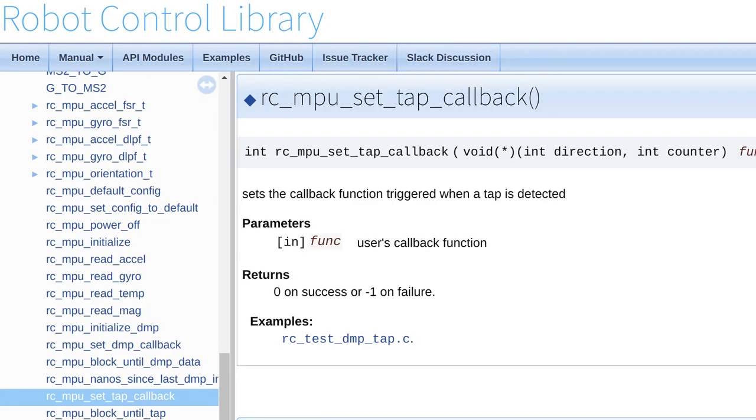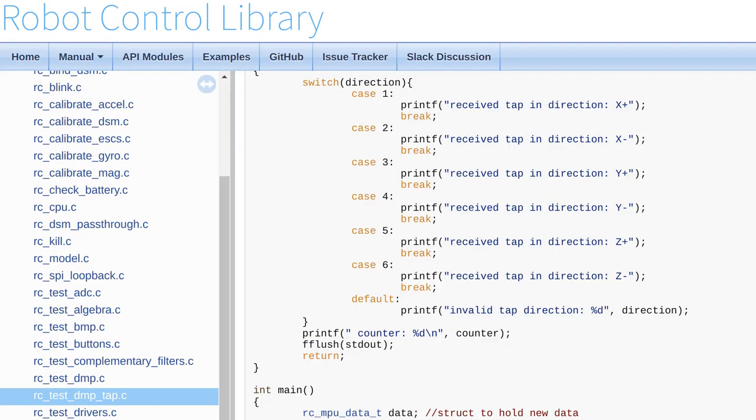If you use robotics cape or BeagleBone Blue board like I do, robot control library supports tap detection out of the box. It can even detect tap direction.